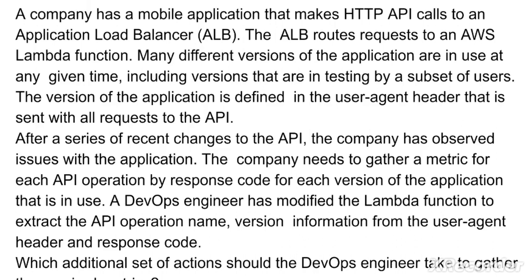The version of the application is defined in the user-agent header that is sent with all requests to the API. After a series of recent changes to the API, the company has observed issues with the application. The company needs to gather a metric for each API operation by response code for each version of the application that is in use.